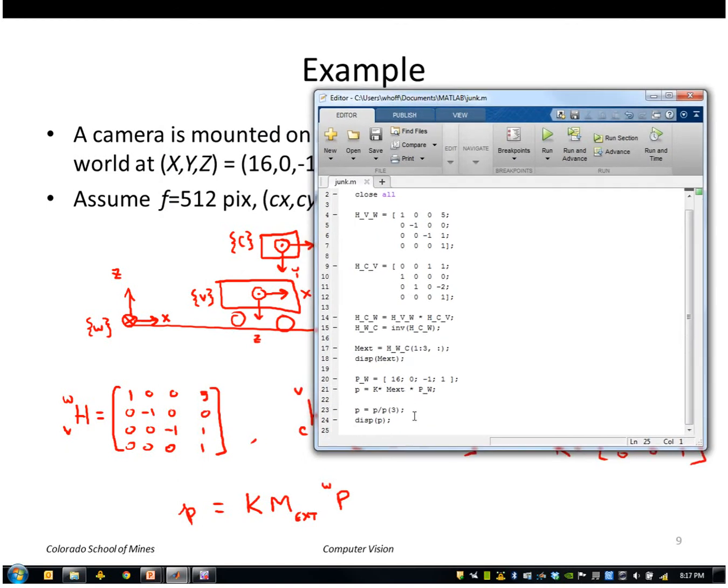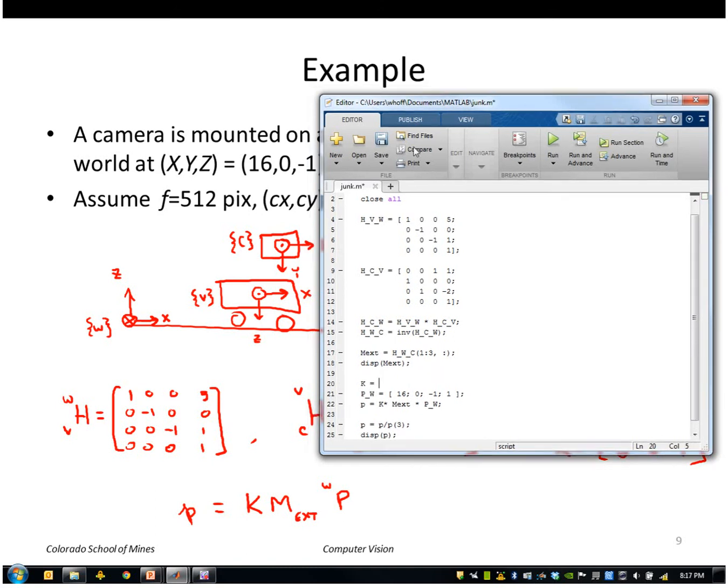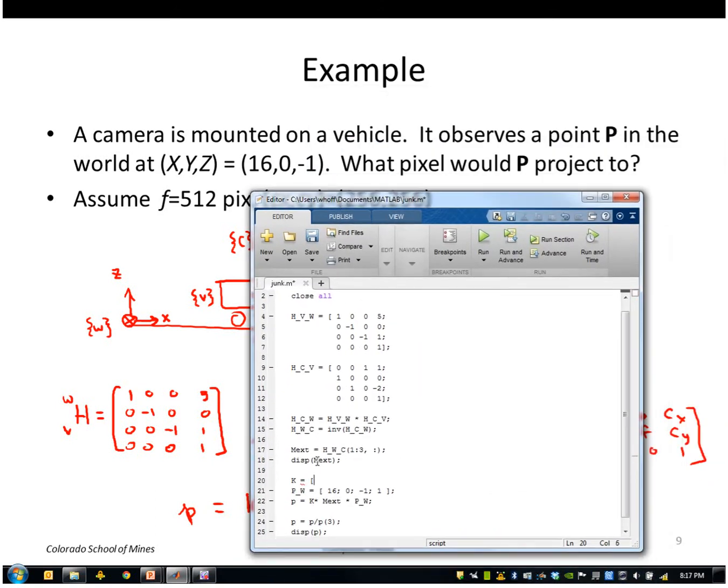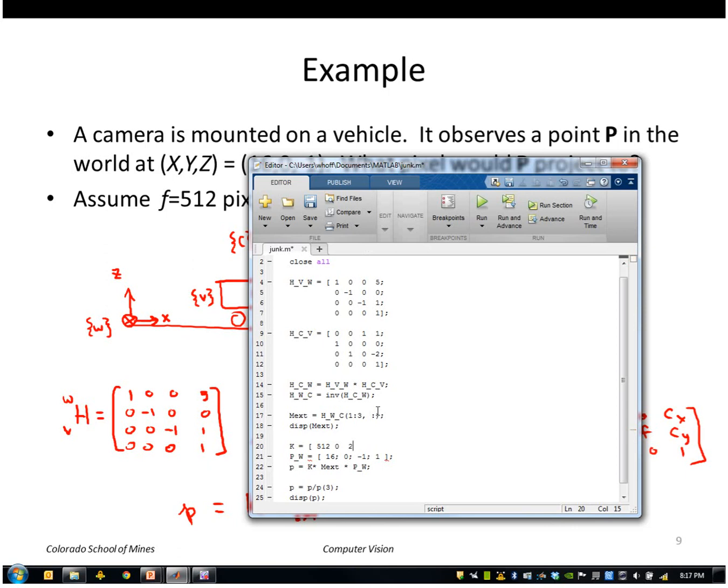So K is, I said the focal length was 512. And the center was at 256. So second row is 0, 512, 256. Third row is 0, 0, 1. Okay, run that again.